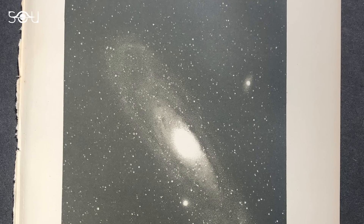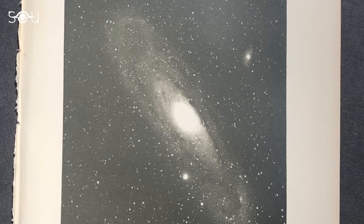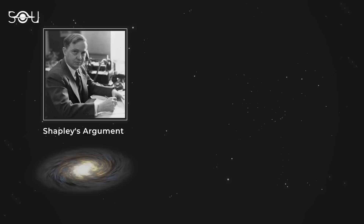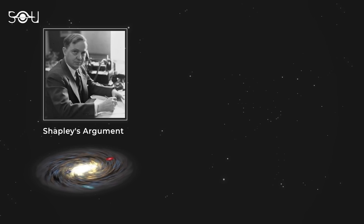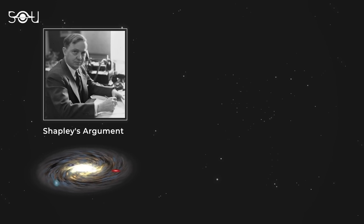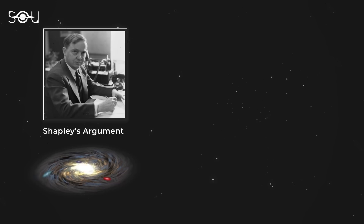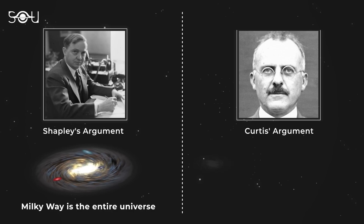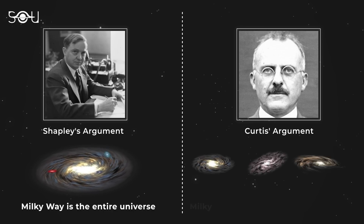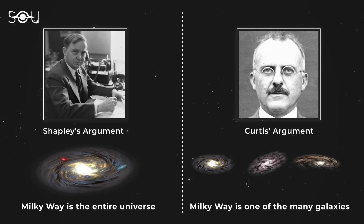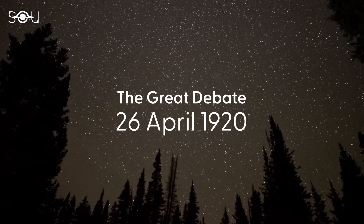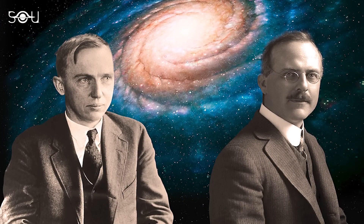The controversy focused on whether or not the spiral nebulae were located within the Milky Way galaxy. Shapley believed that the Milky Way was about 300,000 light years wide and all the star systems existed well within the outskirts of the Milky Way — in other words, the Milky Way was the entire universe. On the other hand, Curtis argued that the nebulae were independent galaxies like our own Milky Way, located far, far away. The debate took place on April 26, 1920, a clash of visions where the scale of the universe and the nature of the nebulae were open questions.